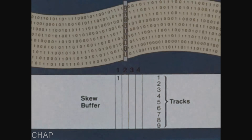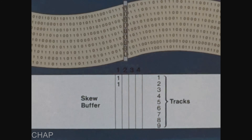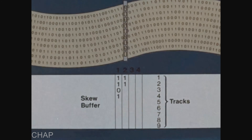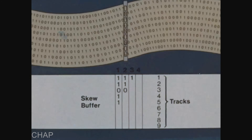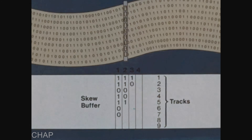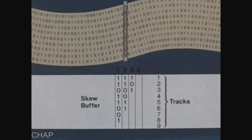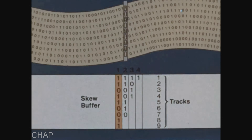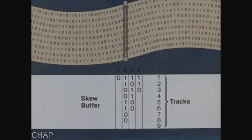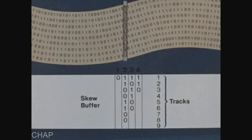During skew, the lagging part of a byte is still being read as the leading parts of succeeding bytes reach the head. Nonetheless, when all nine bits are properly assembled in a buffer, the byte is transferred to the computer. Thus, phase encoding overcomes the problem of skew.